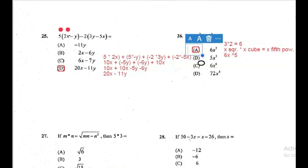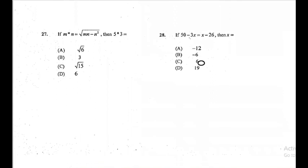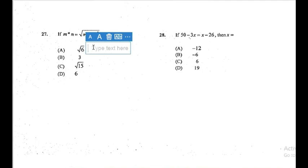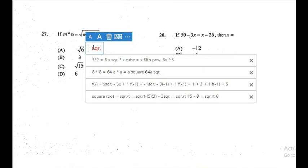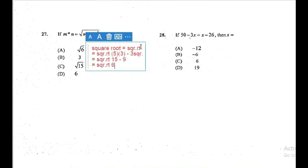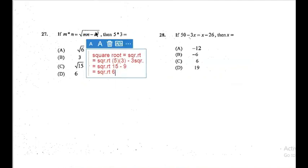Question 27: if mn equals that equation, then what is 5*3? Wherever you see m you put 5, and wherever you see n you put 3. So it becomes the square root of (5 times 3) minus 3 squared, which is the square root of 15 minus 9, the square root of 6. Our answer is A.